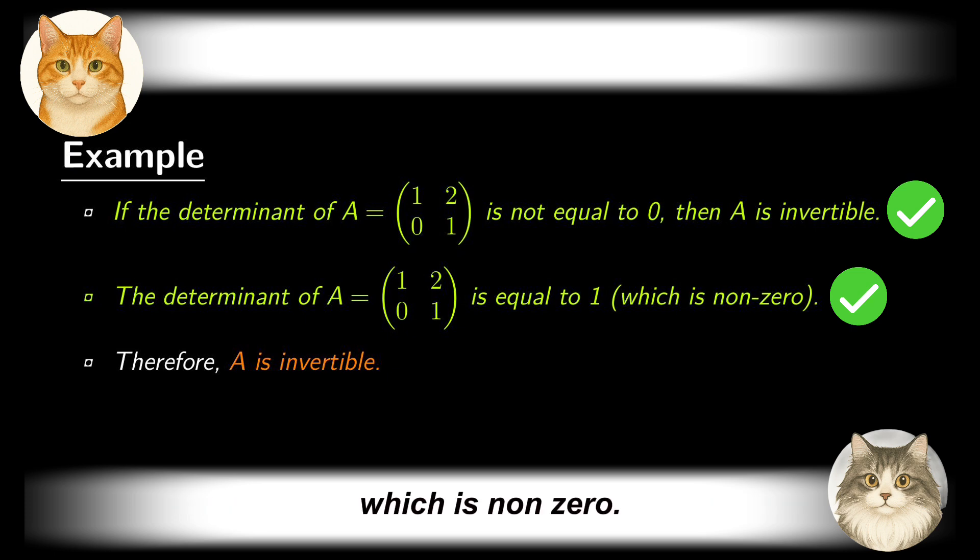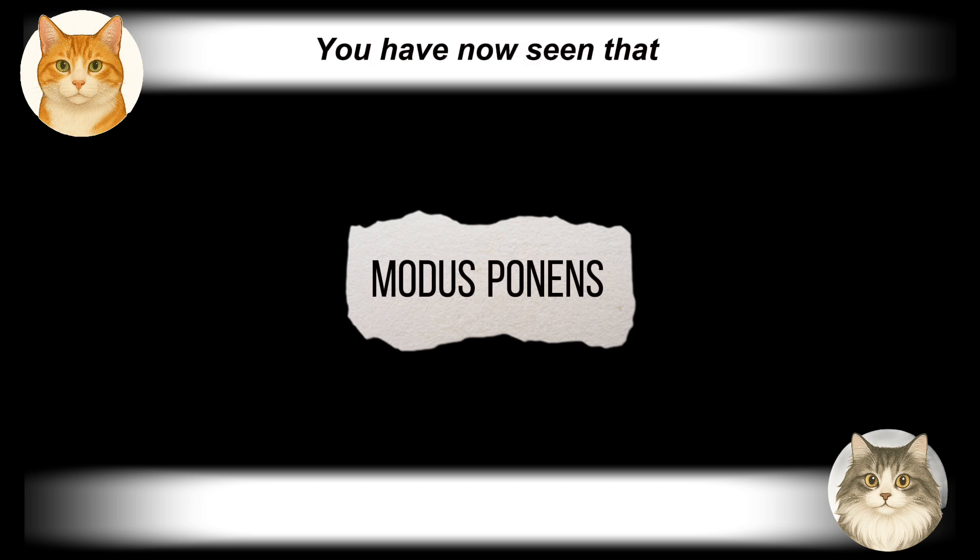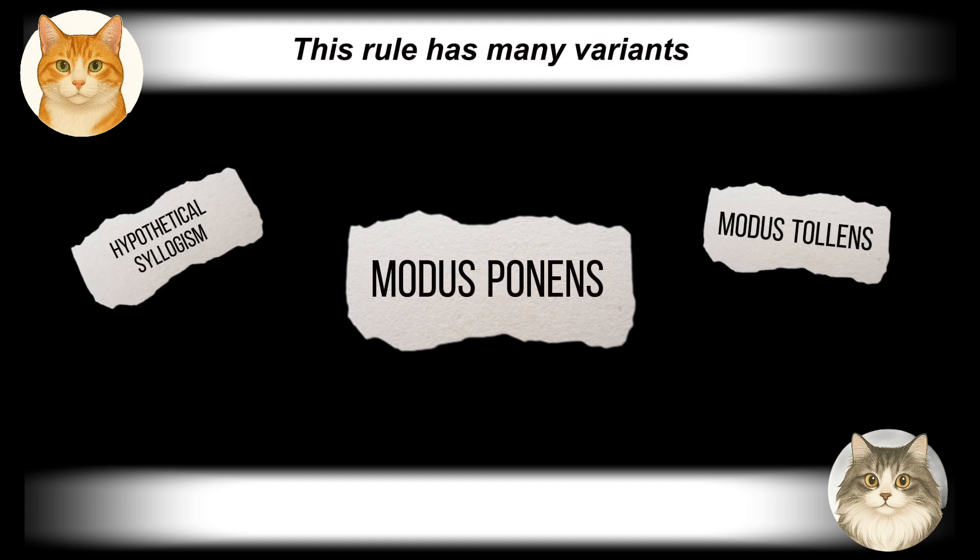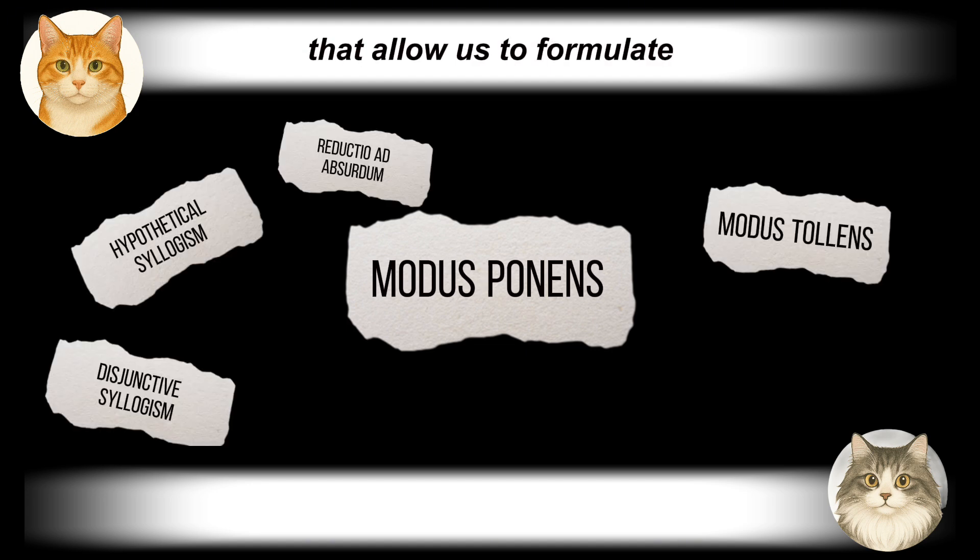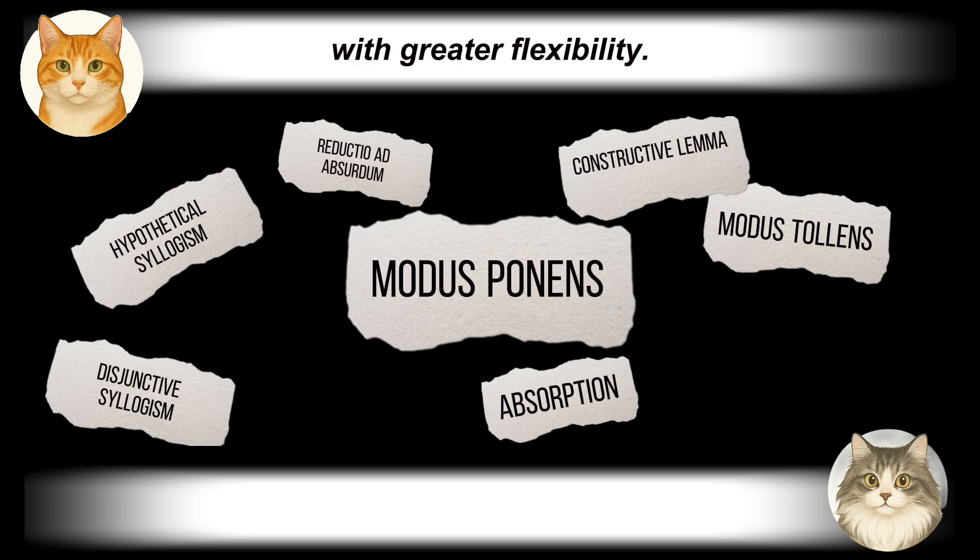You have now seen that modus ponens is indeed a valid rule of inference, as well as how it works. This rule has many variants that allow us to formulate the deduction process with greater flexibility. We will explore them in the next session.